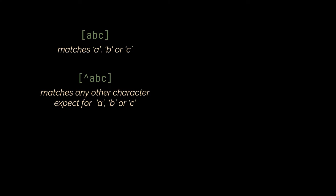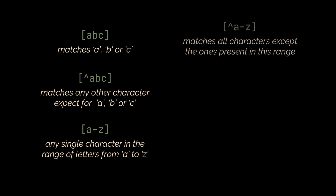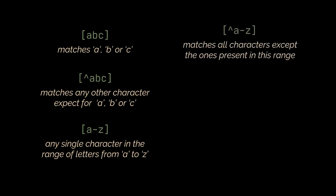Now when you use a dash inside the square brackets, it means you are defining a range. So A dash Z means any single character in the range of letters from A to Z. The caret can also be used here to represent all characters except the ones present in the range defined. In our case, any character except the lowercase letters ranging from A to Z.